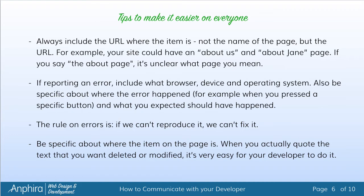If you're reporting an error, always be sure to include what browser, what device, and what operating system you are using. For example, you might be using Google Chrome on an iPad using iOS 9 — that is nice and specific. Also be specific about where the error happened: did it happen when you pressed a button? And be sure to include what you expected to have happened, because sometimes what you are reporting as an error is actually the way it was designed. The golden rule on errors: if your developer can't reproduce it, your developer can't fix it. So always make sure that you have given clear instructions on how to reproduce your errors.